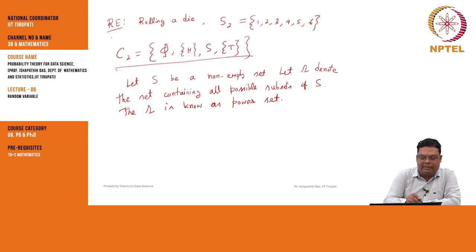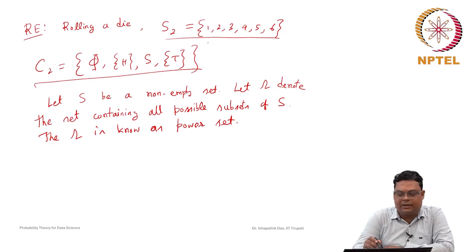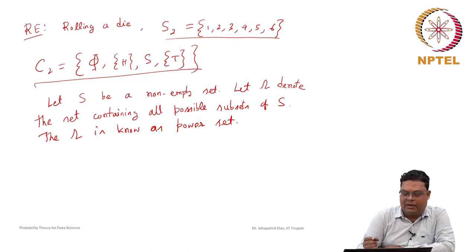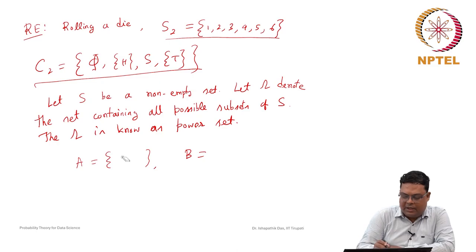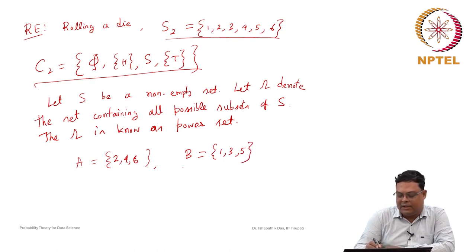Now let us consider the random experiment of rolling a die. The sample space S2 = {1, 2, 3, 4, 5, 6}. Let A be the set of even numbers {2, 4, 6} and B be the set of odd numbers {1, 3, 5}.